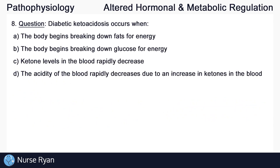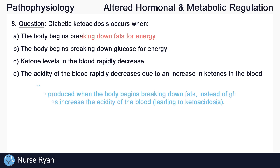And for the last question, number eight: diabetic ketoacidosis occurs when? The answer is A, the body begins breaking down fats for energy. Ketones are produced when the body begins breaking down fats instead of glucose for energy. Ketones increase the acidity of the blood leading to ketoacidosis. And that's it for the altered hormonal and metabolic regulation quiz.